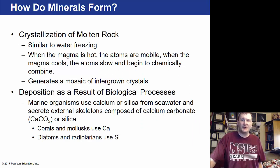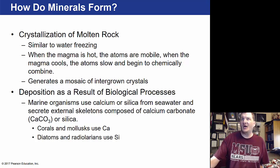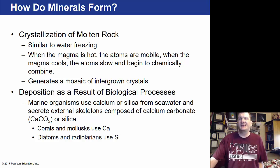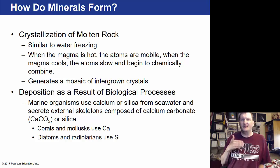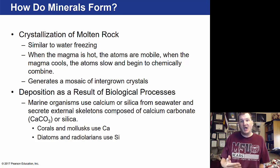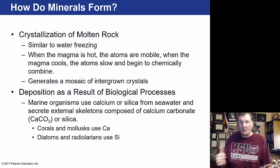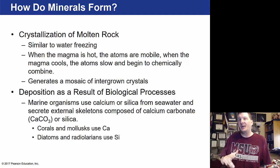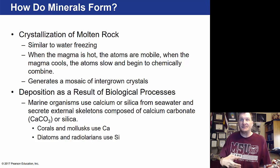Continuing with how minerals form: we can crystallize molten rock. This is similar to water freezing but involves magma and lava. Lava is on the surface; magma is under the surface. When magma is hot, atoms are mobile and can move around freely. When it cools, the atoms slow down, combine, and grow crystals.